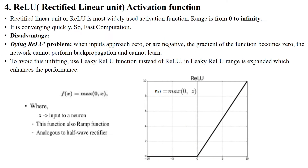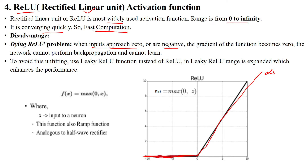The next activation function is ReLU — rectified linear unit — used in the hidden layers of neural networks. It is the most widely used activation function, ranging from 0 to infinity. Any value less than 0 is converted to 0, and it converges quickly, so computational time is very low. The disadvantage is that when inputs approach 0 or go negative, the gradient becomes 0, and the network cannot perform backpropagation once it reaches 0. We cannot apply partial differentiation to the value 0.